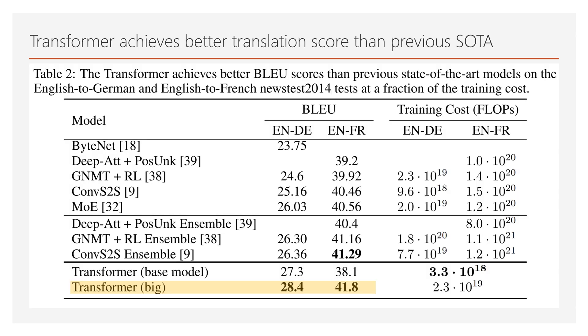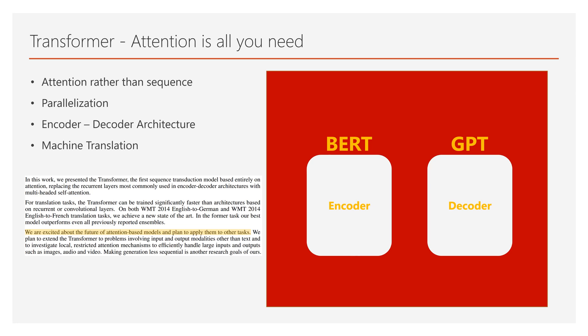The Transformer achieved the best score on machine translation. Importantly, this was not the end — it was just the beginning of NLP innovation with attention. They already knew the potential of attention-based models as stated in the research paper. Now, the Transformer encoder model, which is BERT, and the Transformer decoder model, which is GPT, are currently leading NLP to the next level. If you are interested in the Transformer in more detail, I have a separate video for it.